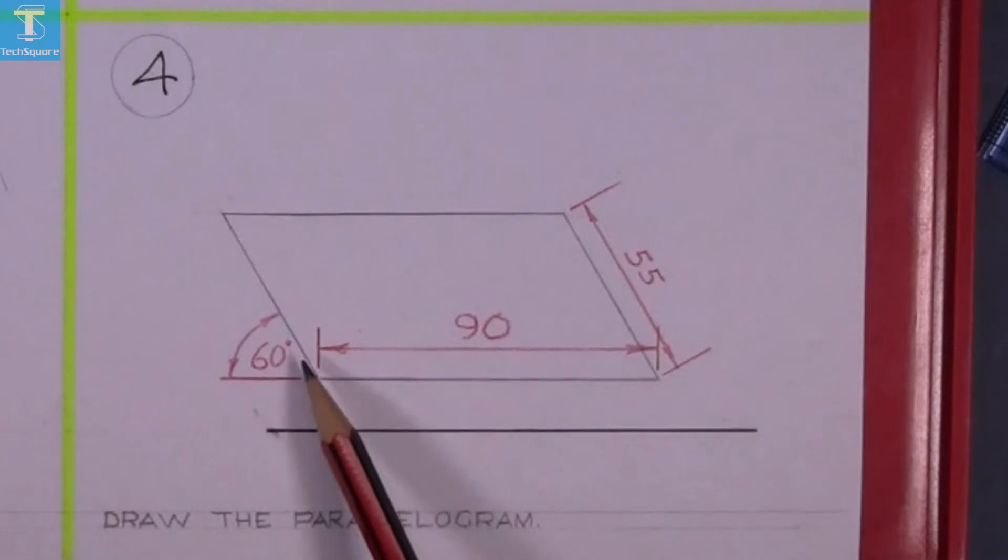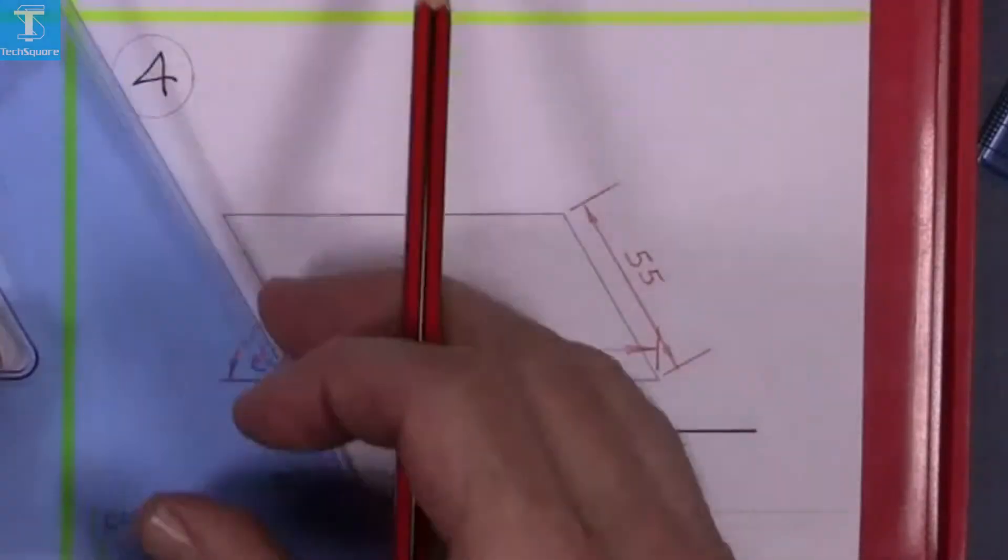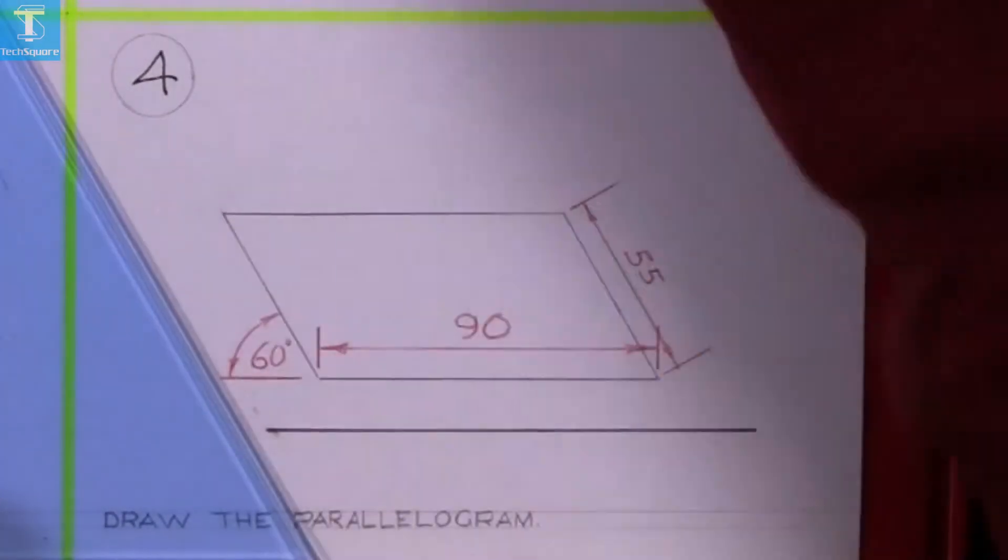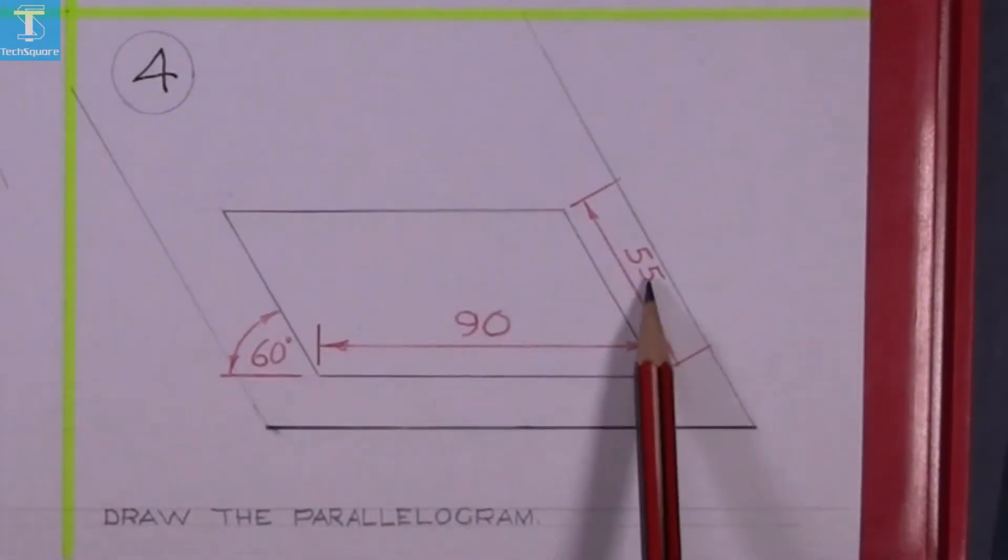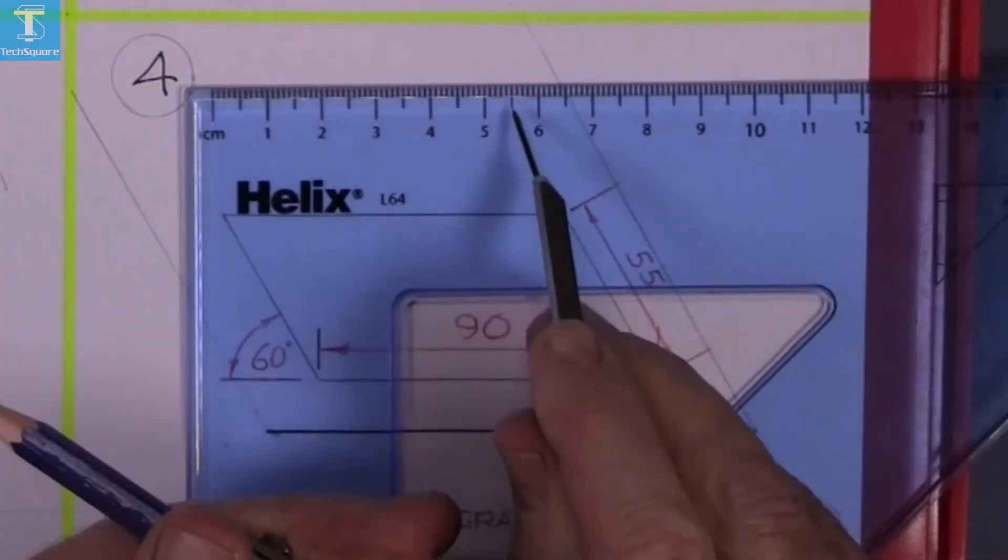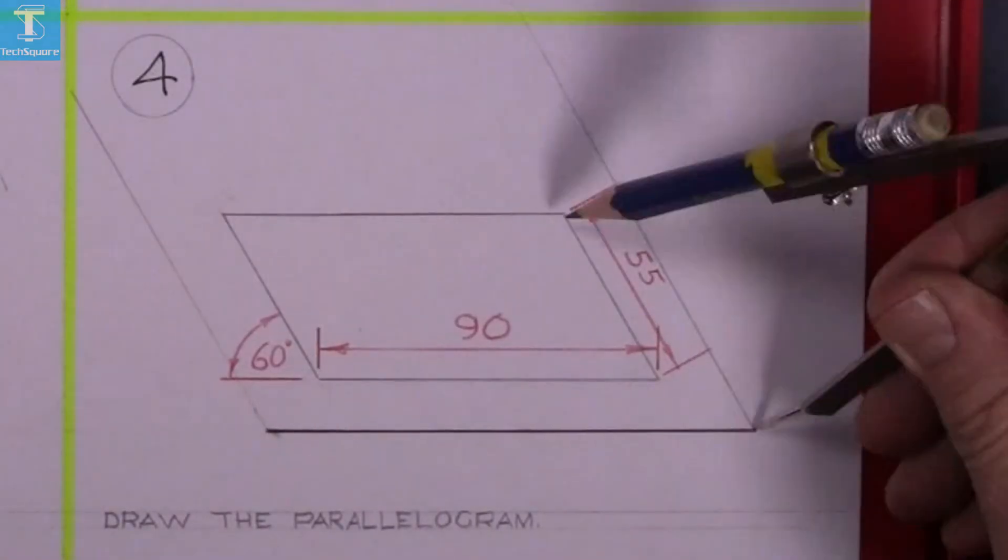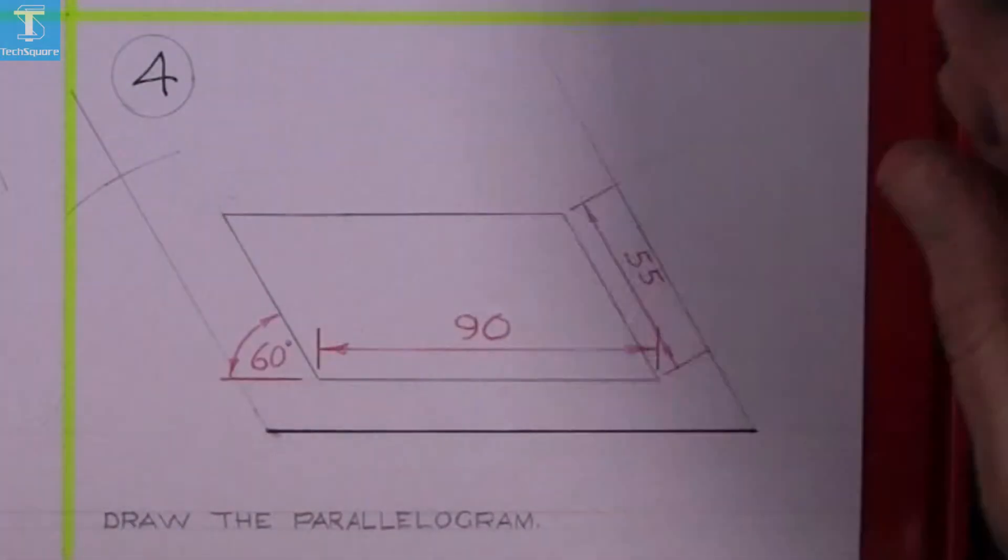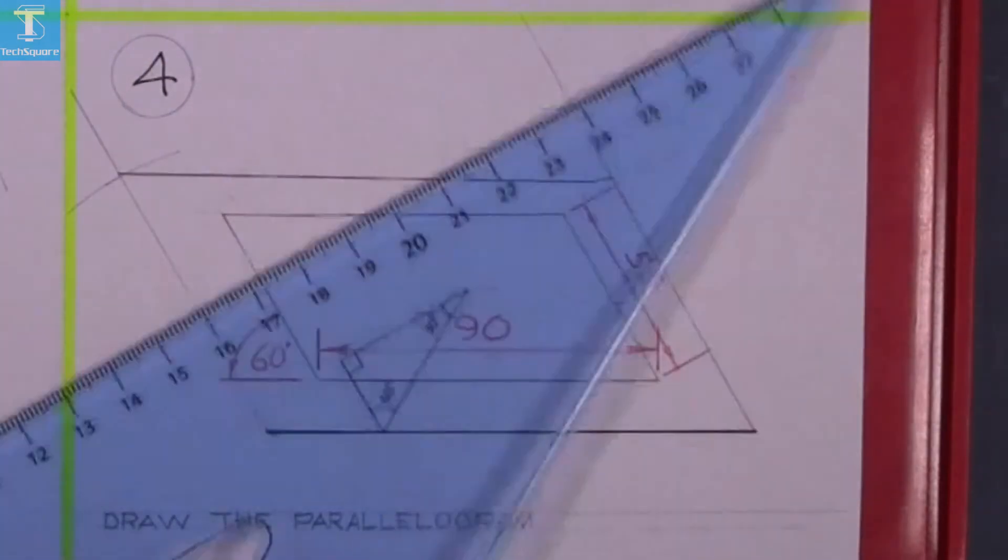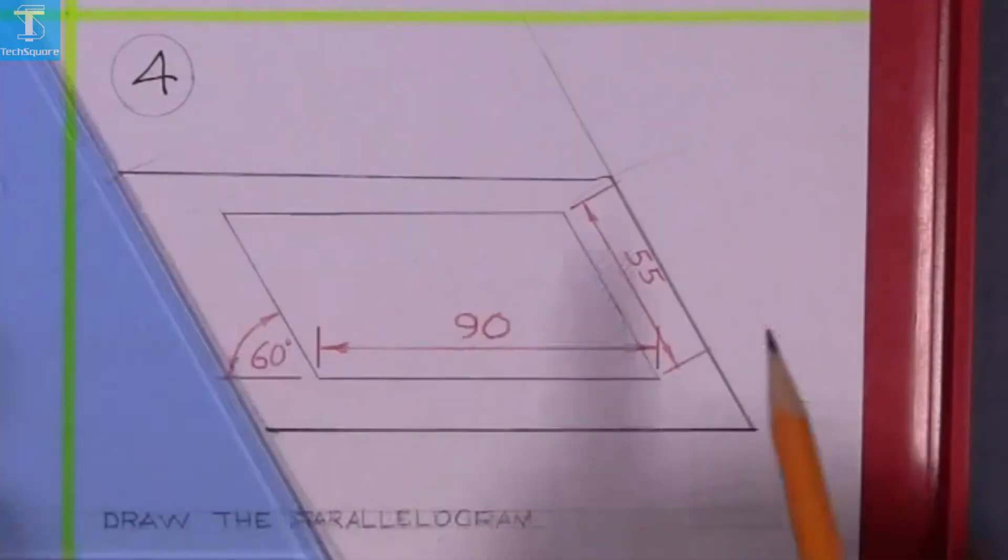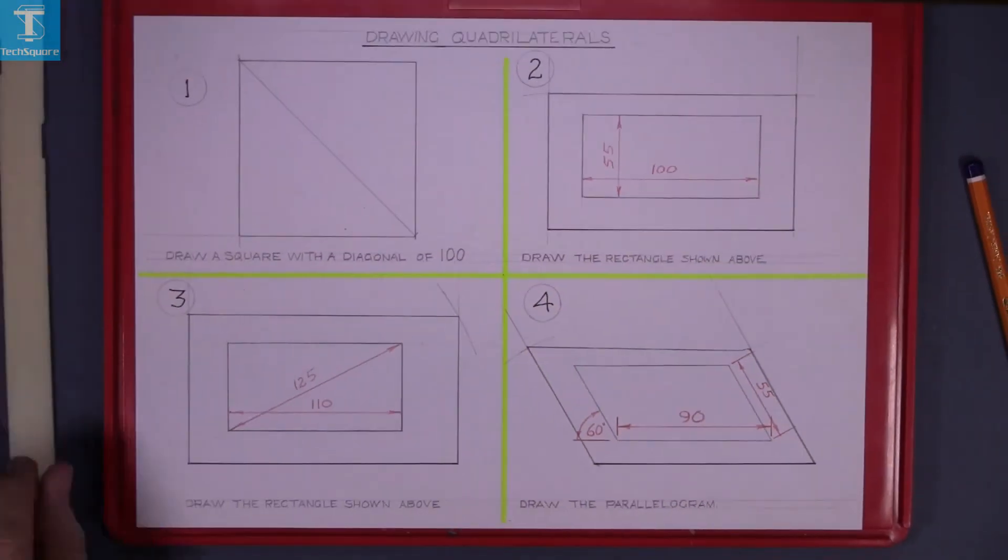First thing here in this case is the angle is 60 degrees. So we get the 60 degree set square and draw through the two points on the base. Set off the height or the length of each of those lines so 55, and then draw the horizontal line through those two points. And that is your parallelogram drawn.